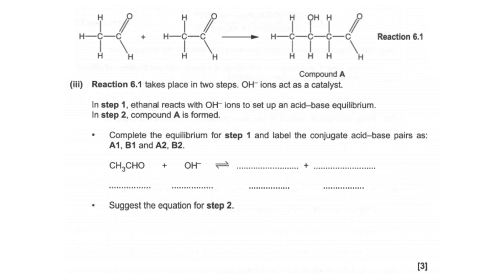For the next part we've got to write the equilibrium for step one and identify the conjugate acid-base pairs. The OH⁻ ion is obviously a base, so I'll call that B1, which means this aldehyde must be acting as an acid, so I'll call that A2. The OH⁻ ion is going to accept a proton from the aldehyde and become water — that's A1, the conjugate acid of OH⁻. The aldehyde becomes the carbanion — that's B2.